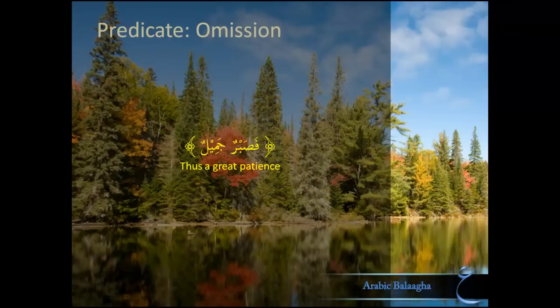Allah عز و جل says in Surah Yusuf, quoting Yaqub alayhi s-salam: فَصَبْرٌ جَمِيلٌ — Thus a great patience. Notice that this is not a full sentence. Interestingly, we can either assume this is the subject with the predicate omitted — فَصَبْرٌ جَمِيلٌ أَجْمَلٌ, meaning 'a great patience is better' — or that this is the predicate with the subject omitted: فَأَمْرِي صَبْرٌ جَمِيلٌ, meaning 'my course of action will be a great patience.' Part of the purpose of omission here is to allow for both interpretations; if there was no omission, one would have to be fixed, and the verse would lose that flexibility.